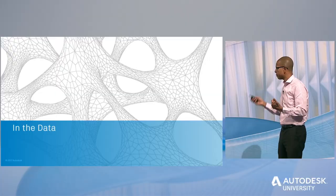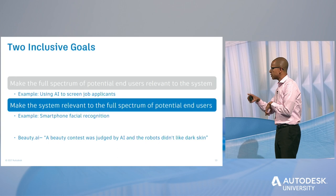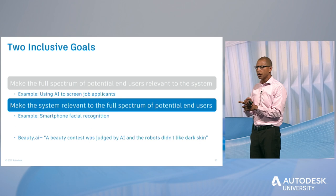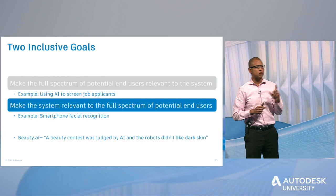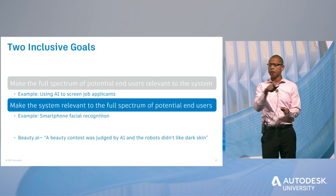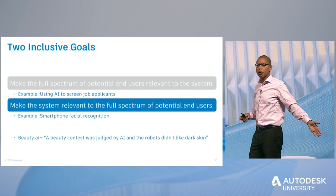We have two real goals around inclusion: one is to make the full spectrum of end users relevant to the system, and the other — from a different mindset — is to make the system relevant to the full spectrum of potential end users. For example, using AI to screen job applicants: if you focus on certain very specific schools that may have nothing to do with someone's ability to be successful, are there whole groups that don't become part of the process from the beginning?